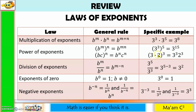For power of exponents, we multiply the exponents. So we copy the base, 3, and then 3 times 5 is 15, so we have 3 to the 15th power. In this case, we distribute the exponents. So we have 3 to the 3rd power, or 3 cubed, times 2 to the 3rd power. So 3 cubed times 2 cubed.